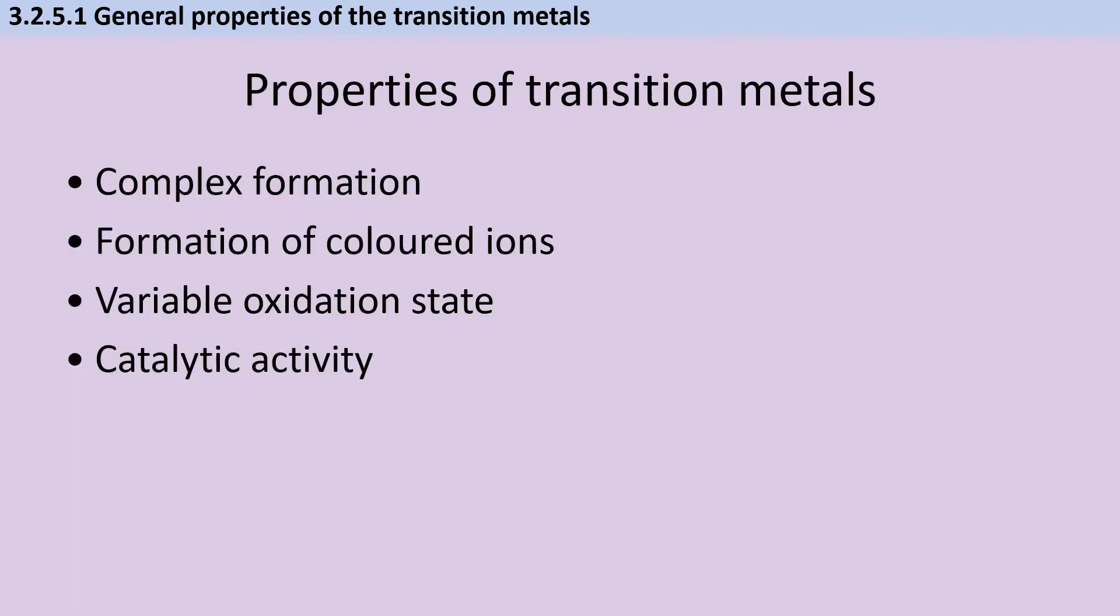The four key properties you need to recall for transition metals are that they form complexes, they form colored ions, they have variable stable oxidation states, and their catalytic activity.